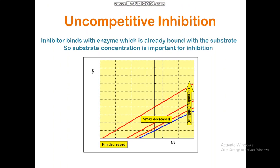In case of uncompetitive inhibition, the inhibitor binds with the enzyme that is already bound with the substrate, so the substrate concentration is important for inhibition. In this case, both Vmax and Km will be changed, and the lines pattern will be parallel to each other. The blue line represents the control line in the Lineweaver-Burke plot.